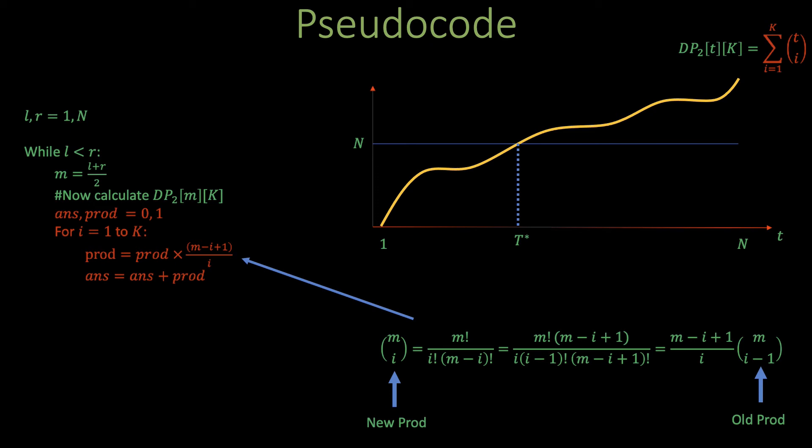This algorithm takes O(1) space since it doesn't use any additional memory other than variables. And takes O(log N) iterations for the binary search. And inside each of those binary searches it takes O(K) time to calculate the yellow curve value.